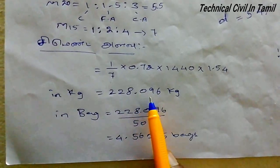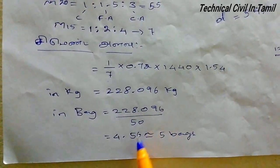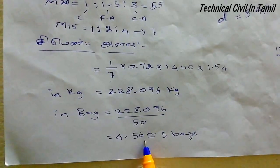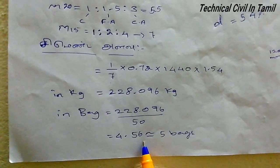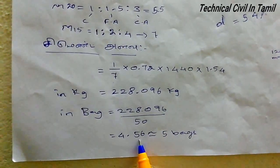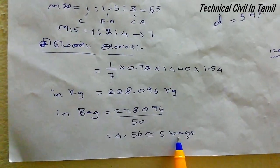The result is 228.096 kg, so approximately 228 kg of cement is needed.